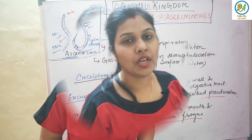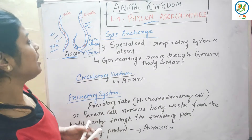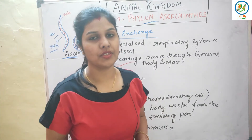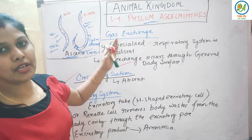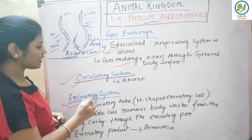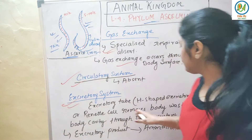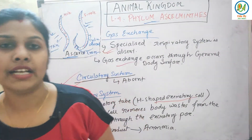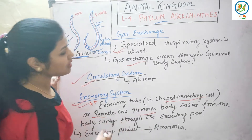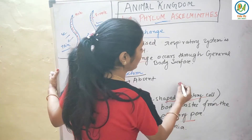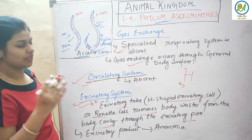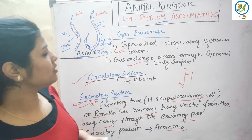Now let's look at gas exchange. In Aschelminthes, specialized respiratory structures are absent — similar to Platyhelminthes. Gas exchange occurs through the general body surface. Circulatory system is also absent, as it was in the previous phylum. For the excretory system, H-shaped excretory cells and renette cells are present. These are very important and frequently appear in exams.